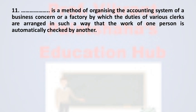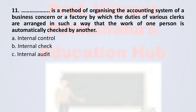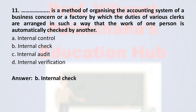Question number eleven: this is a method of organizing the accounting system of a business concern or factory by which the duties of various clerks are arranged such that the work of one person is automatically checked by another. Option A internal control, option B internal check, option C internal audit, option D internal verification. The correct option is option B, internal check — this automation system where one clerk checks the work of another is called internal check.